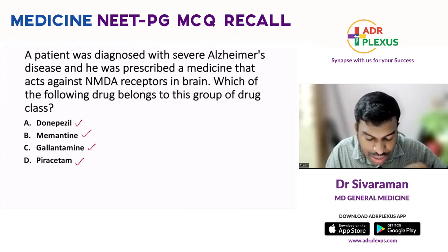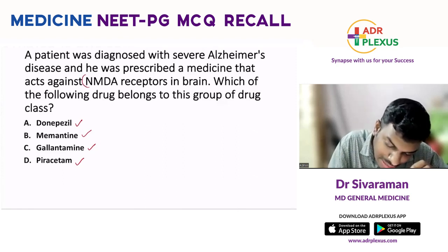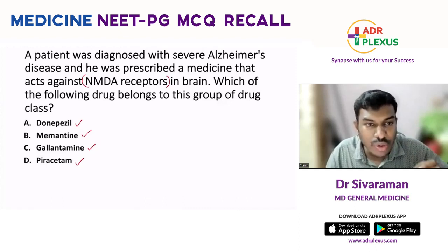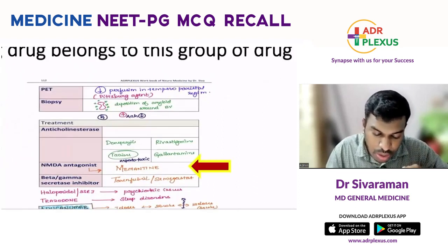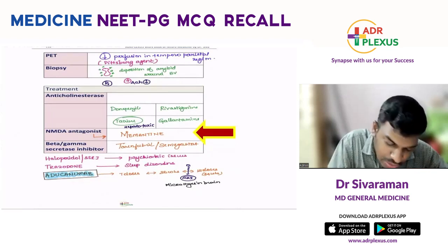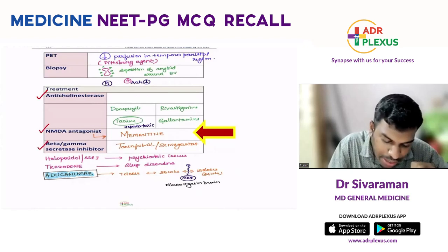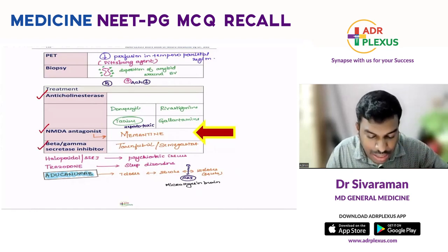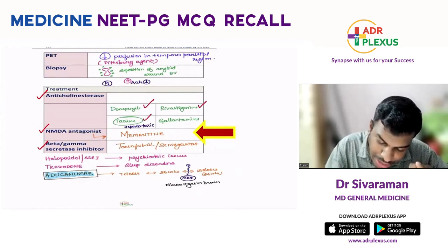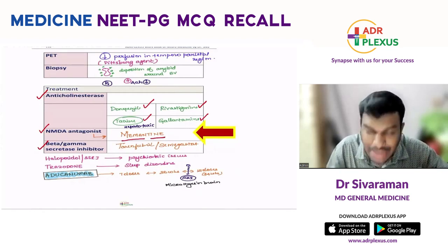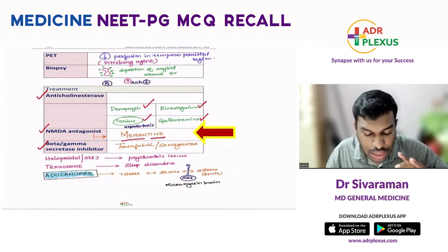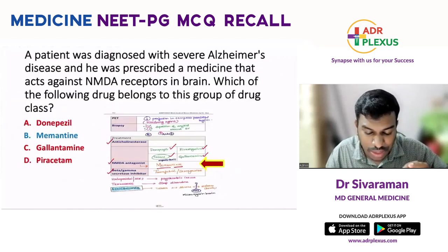The question asks which drug targets NMDA receptors. As discussed in our routine class, treatment of Alzheimer's disease includes anti-cholinesterase agents, NMDA antagonists, and beta/gamma-secretase inhibitors. Anti-cholinesterase agents include donepezil, rivastigmine, tacrine, and galantamine. The NMDA antagonist, which is the memory-enhancing drug, is memantine. So the answer is memantine, which acts on the NMDA receptor as an antagonist.